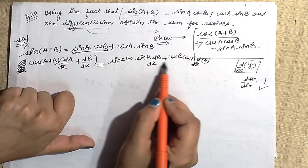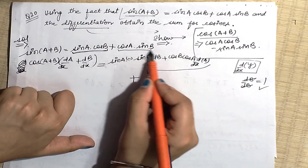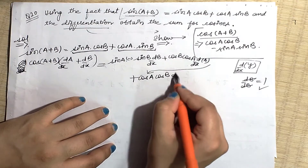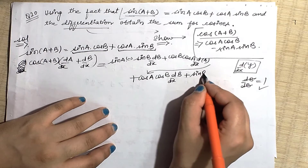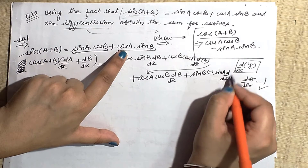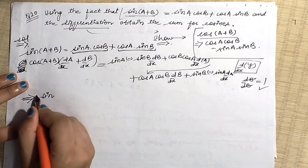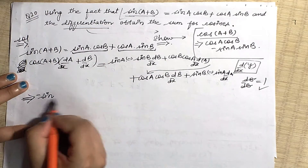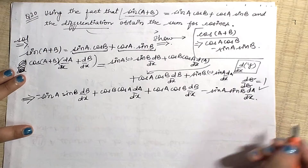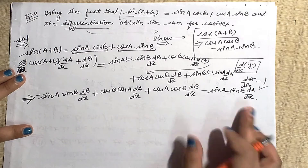Continuing the differentiation of the right hand side: cosA times d/dx(sinA part) gives cosB · cosA · da/dx, plus sinB times the differentiation of cosA which gives −sinA · da/dx. Let me write the right hand side on one line: we get −sinA sinB · db/dx as well. I am writing it all in one line so it is clear for you.